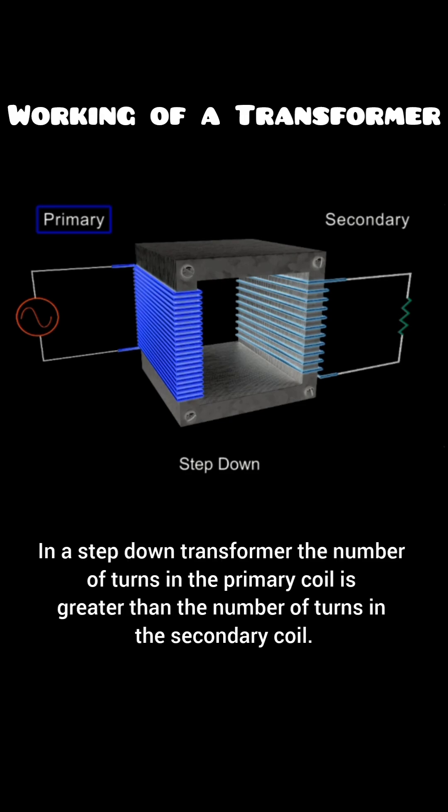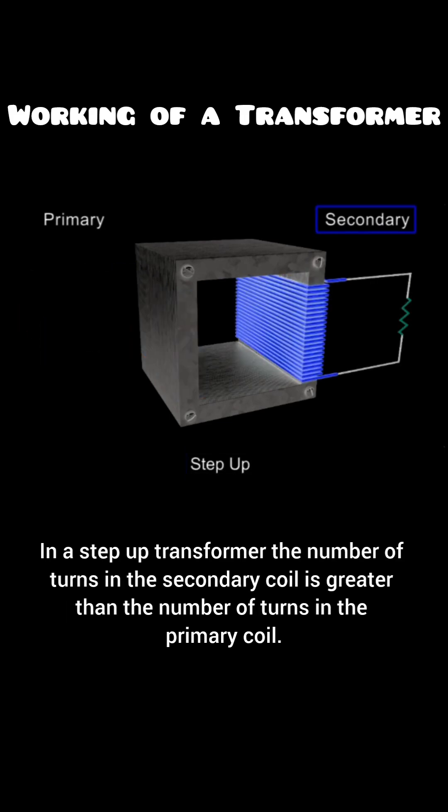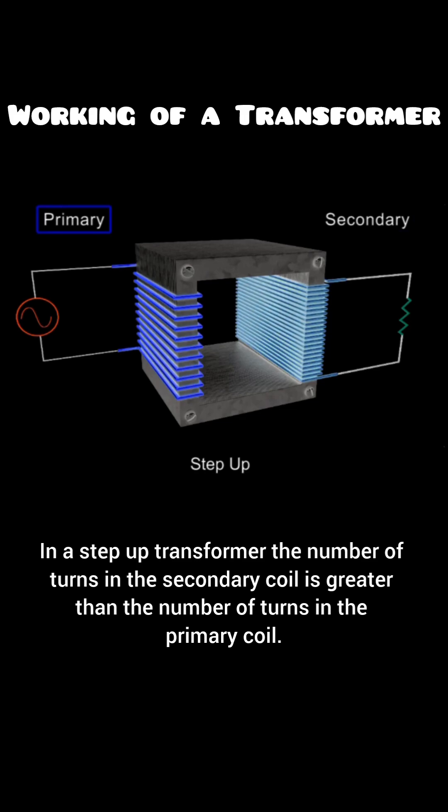In a step-down transformer, the number of turns in the primary coil is greater than the number of turns in the secondary coil. In a step-up transformer, the number of turns in the secondary coil is greater than the number of turns in the primary coil.